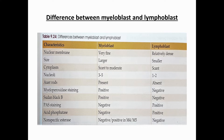On peripheral smear and bone marrow, we differentiate myeloblasts from lymphoblasts morphologically. This is important because both leukemias have different treatments, different age of presentation, different clinical outcomes, and different prognosis. Ultimately flow cytometry detects CD marker differences, but morphologically it is also possible to differentiate myeloblasts from lymphoblasts.